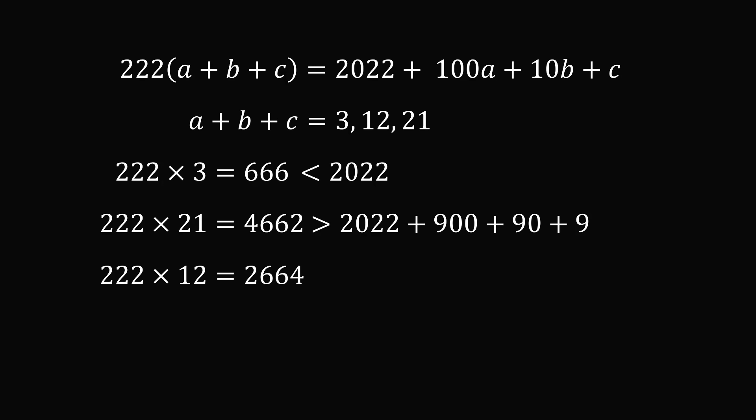222 times 12 is equal to 2,664. If we subtract 2,022, we will get 642, which is exactly equal to the value of 100A plus 10B plus C. We can just read the digits off: 6, 4, and 2. So the mystery number N is equal to 642. And that's the answer.